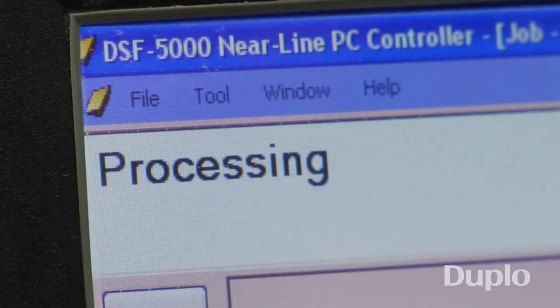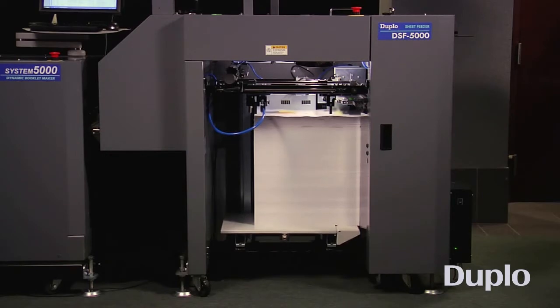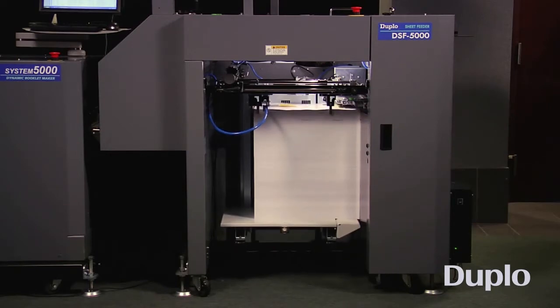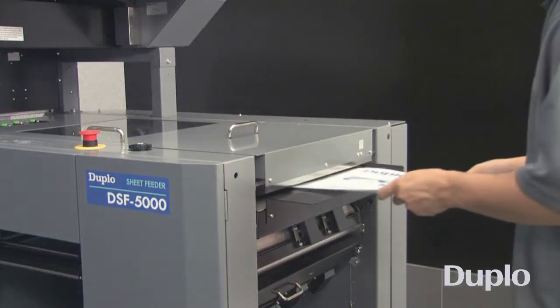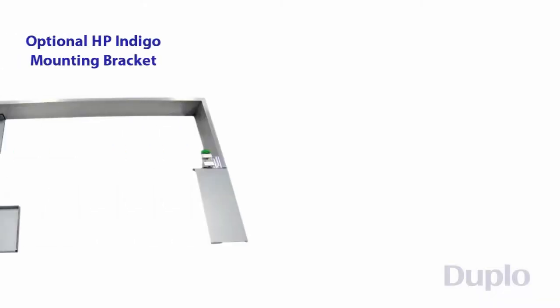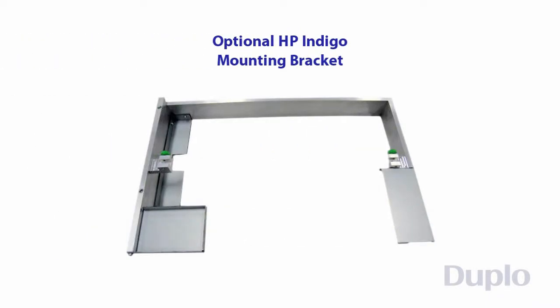Once you press start, the DSF 5000 will begin to feed sheets from the high capacity 24-inch stacker, which minimizes constant reloading and allows a higher production output. For low-volume jobs, a hand-feed mode is available. HP Indigo Press users can utilize the compatible paper tray attachment for direct loading.